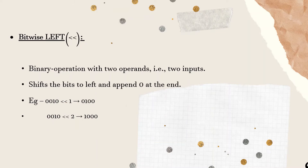Next is the left shift operator. The left shift operator shifts a given number of bits in the bit pattern to the left and appends 0 to the end. For example, 0011 shifted left by one bit gives 0100. And 0010 shifted left by two bits gives 1000.